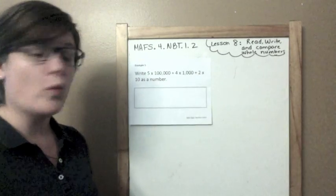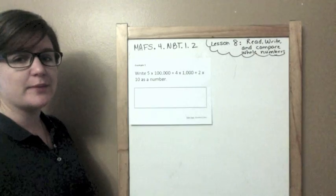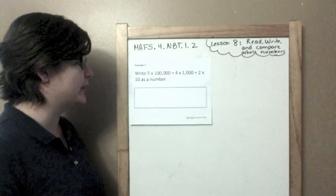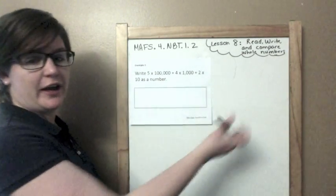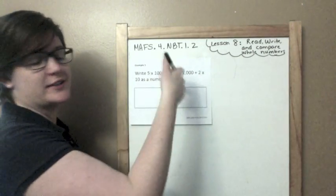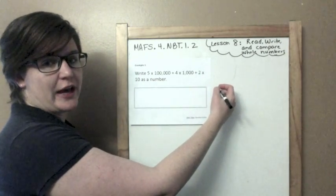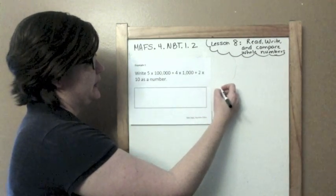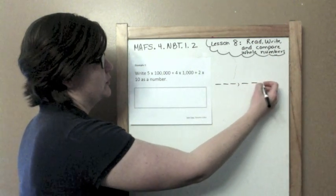Alright, we're on example one. It says write 5 times 100,000 plus 4 times 1,000 plus 2 times 10 as a number. I'm going to show my work over here, because that's my equation editor, and then I'll write my finalized answer into the box. Nothing but my answer goes into the box. Keep your work to the side. Alright, so we've got 5 times 100,000. Well, what is 5 times 100,000? That would be, here I can see that we're starting in the 100,000s place.